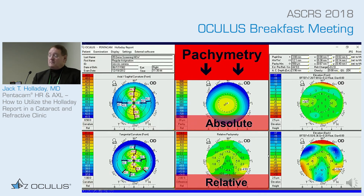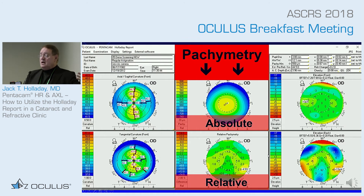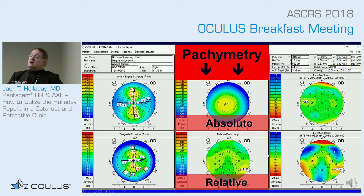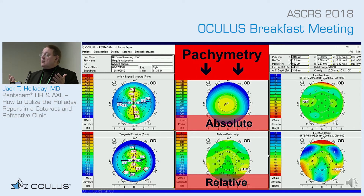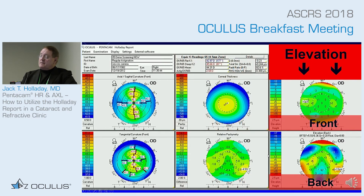The second column is pachymetry. The normal pachymetry map on top always shows the thinnest point in the center — marked by the black circle — and gets thicker toward the periphery, because it's a negative meniscus lens. The relative pachymetry map gives the percentage thicker or thinner than normal at every location. Values of minus 1.4, minus 2, minus 0.5 percent — plus or minus a couple percent is normal. This is very helpful in keratoconus and post-refractive surgery evaluation.